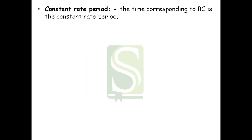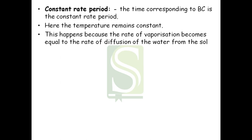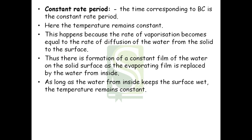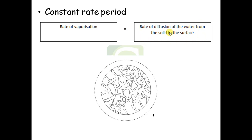The second period is the constant rate period, represented by B–C on the graph. Here the temperature remains constant because equilibrium is maintained. This occurs because the rate of vaporization becomes equal to the rate of diffusion of water from inside the solid to the surface. The water continuously comes out to the surface, forming a constant film of water on the solid surface. This evaporating film is continuously replaced by water diffusing from inside.